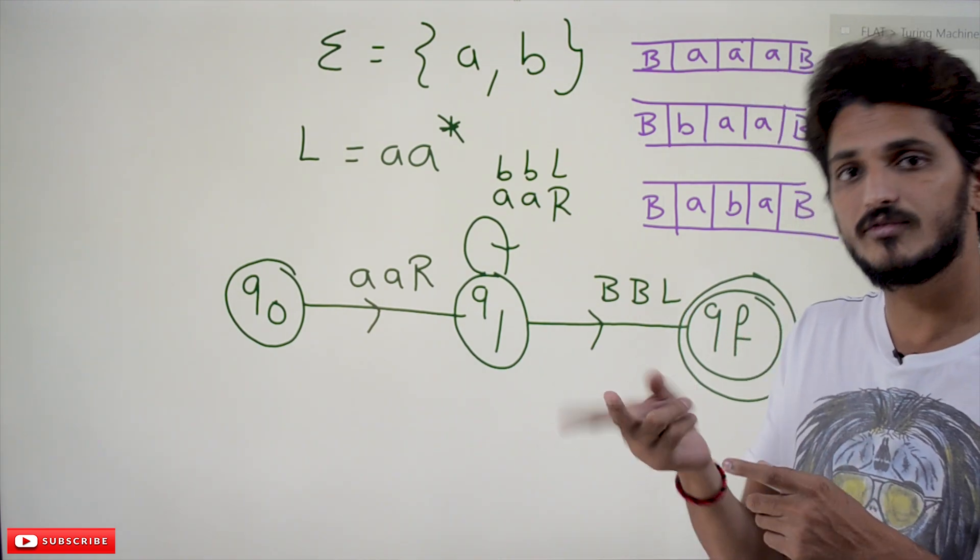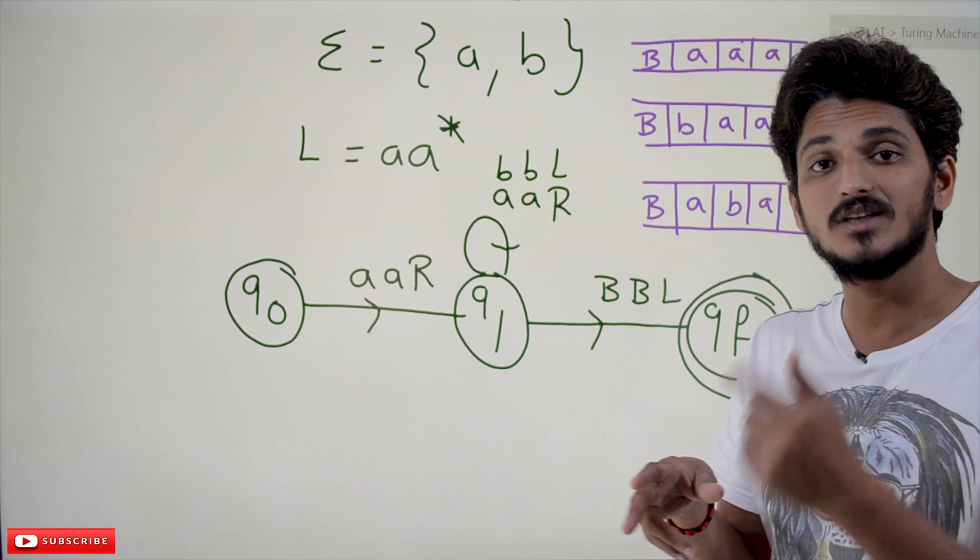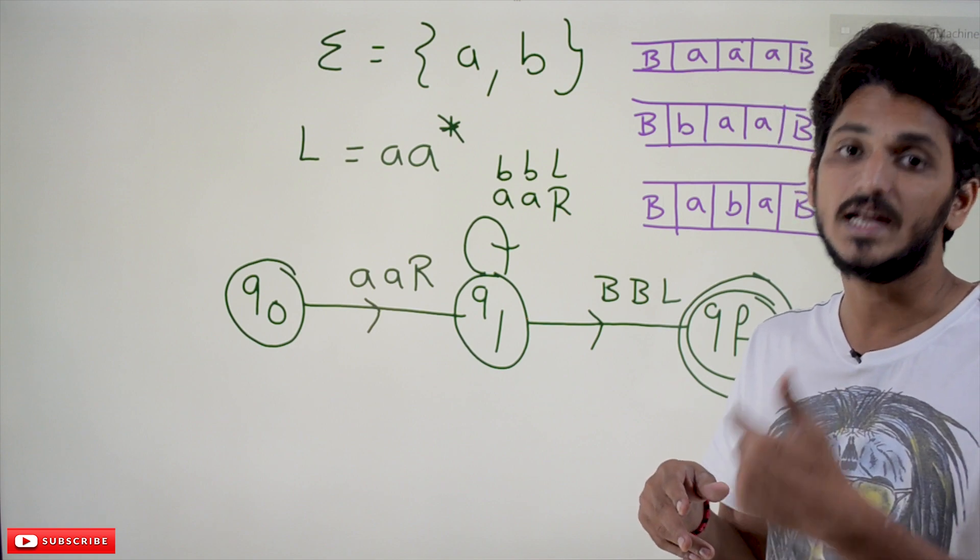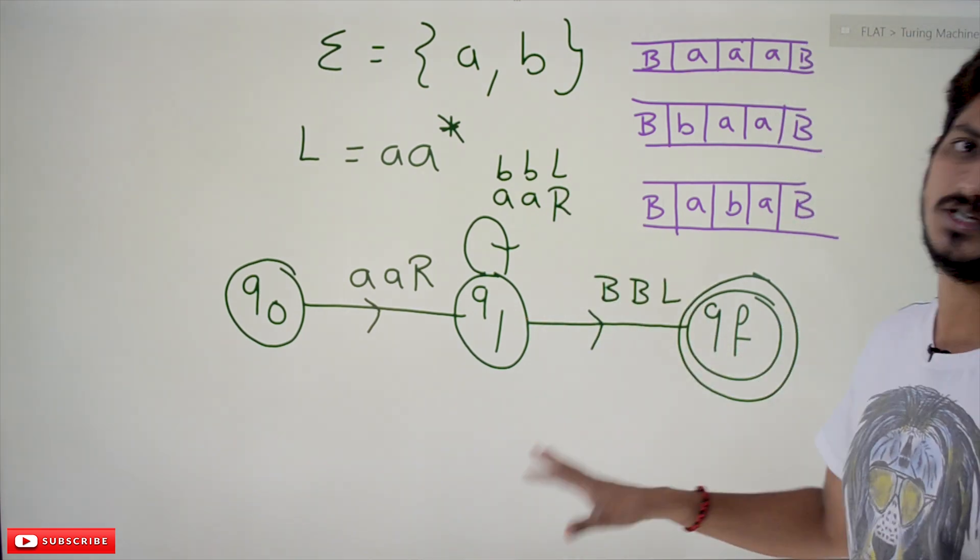So there is a chance of left right left right left right - there is a chance of forming a loop. That is what non-halting Turing machine is.